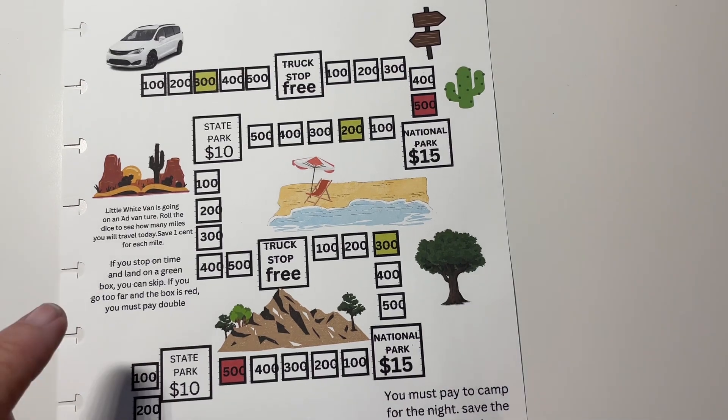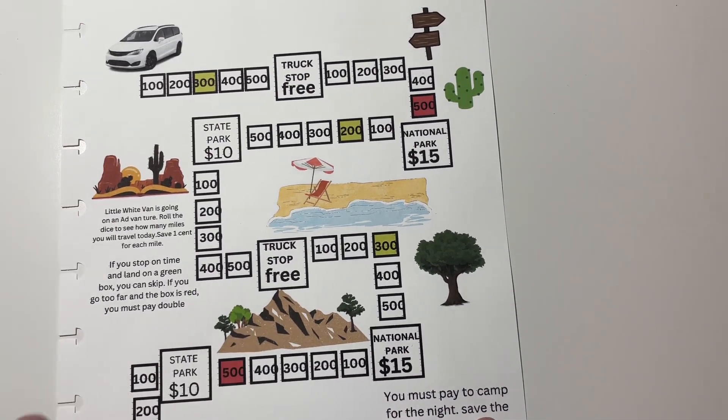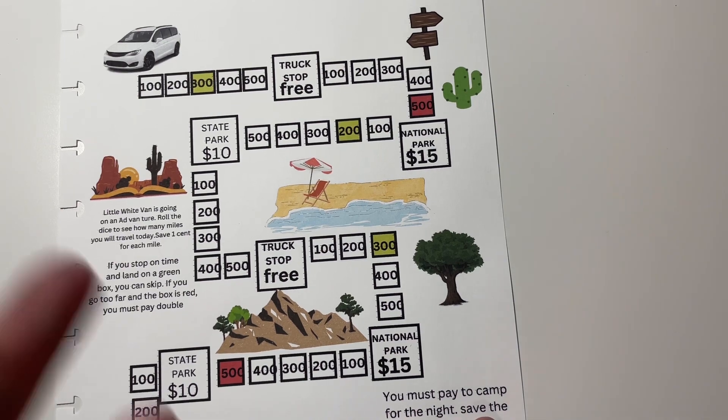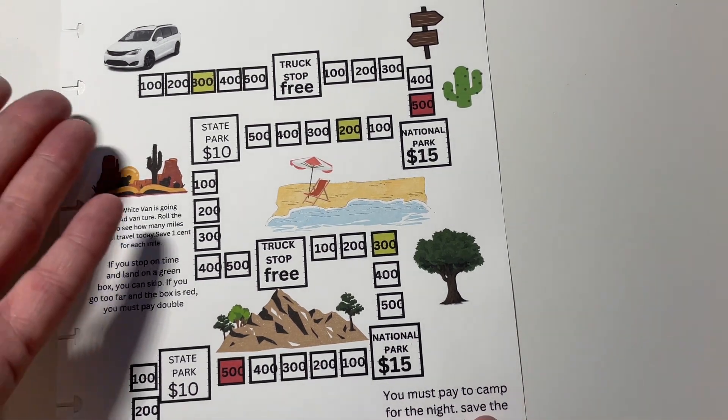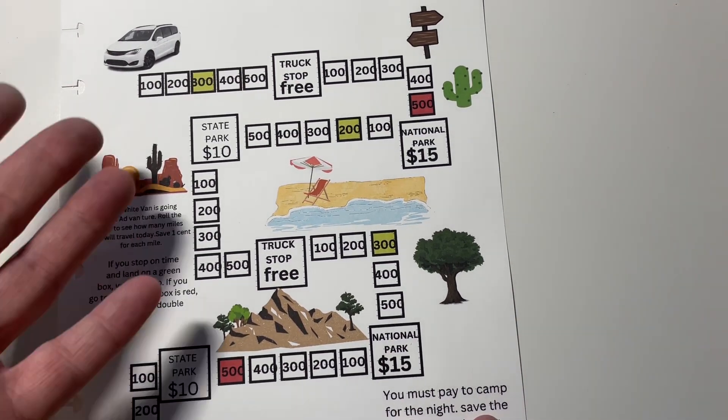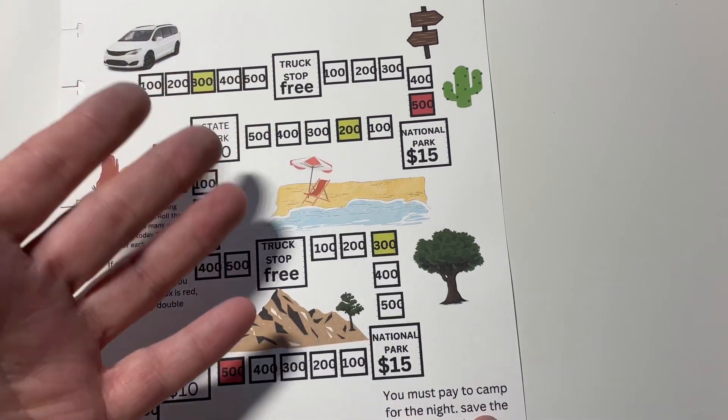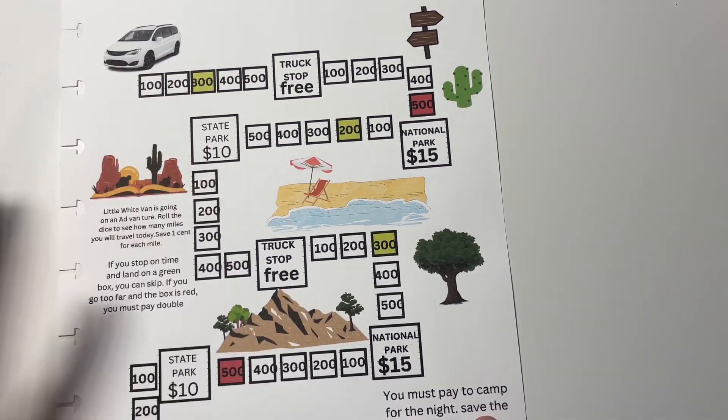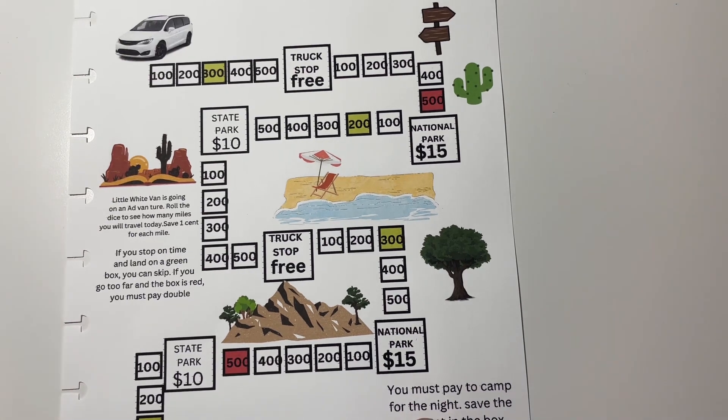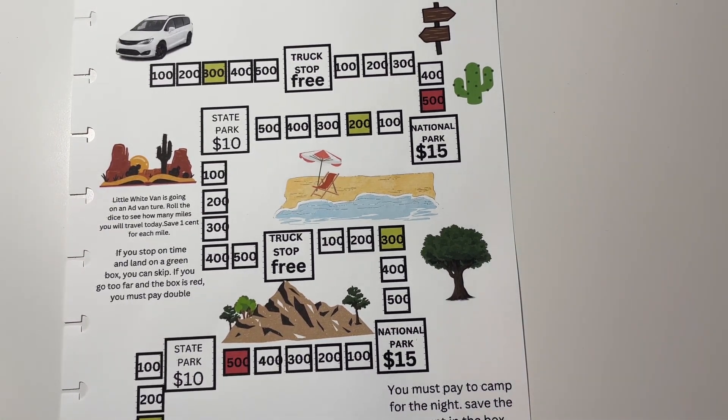And you're going to roll those dice. You're going to pay one penny for every mile that you travel that day. I had to do one penny because, you know, I want this to be a savings challenge that people can afford, but a little white van needs to travel more than a mile or two a day. So I made it one penny so that would be 100 and 200 and 300 mile increments.